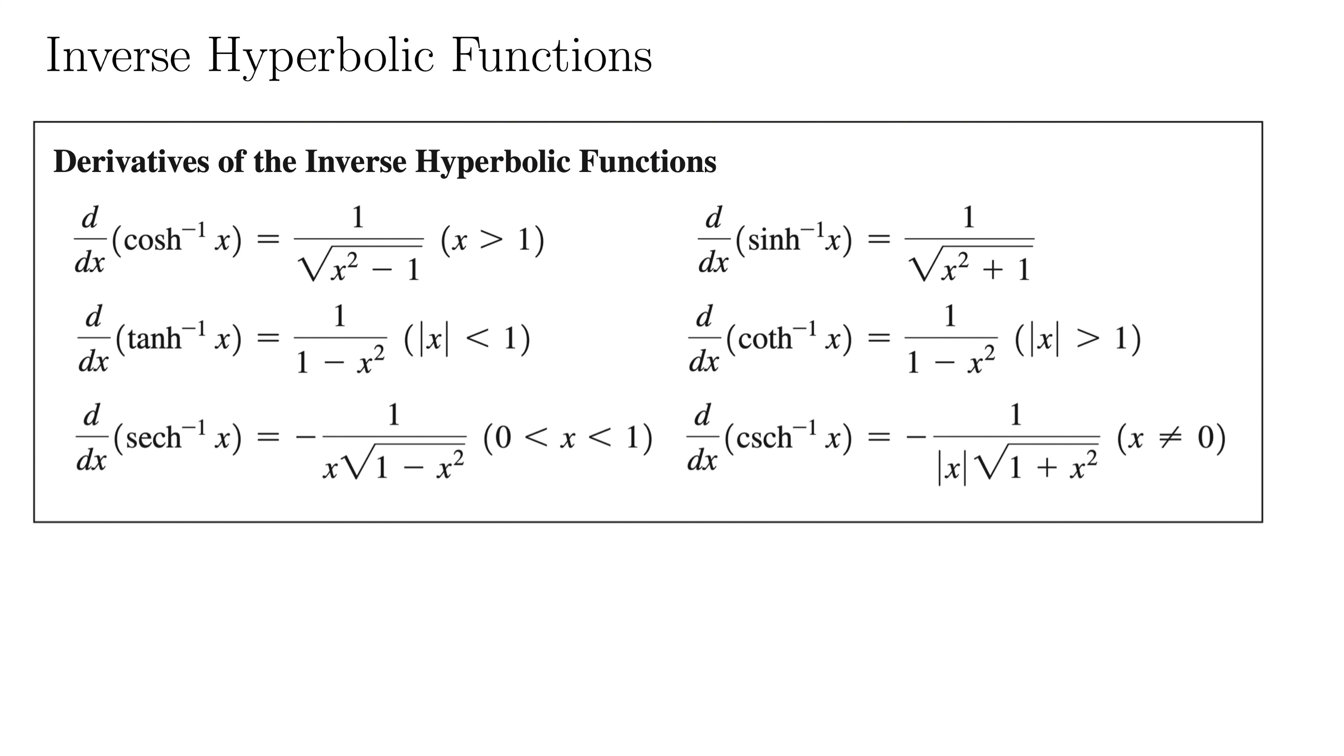For instance, we have the derivative of inverse cosh x is 1 over the square root of x squared minus 1, as long as x is greater than 1. Okay, well that's fine. And then we have all the rest of them.